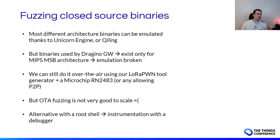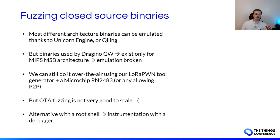The problem with the gateway firmware is that it's only available in MIPS MSB architecture, which is broken for Killerb or Unicorn Engine currently. We can still do over-the-wire fuzzing but it doesn't scale well. There are also alternatives using a debugger to instrument the binary. For exploitation, after finding a bug, we could expect to leak keys, achieve arbitrary code execution, and perform backdooring — but it's challenging because you often don't know the firmware version, how it was compiled, the instruction set, or the target architecture.